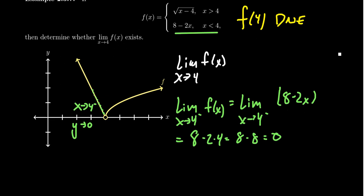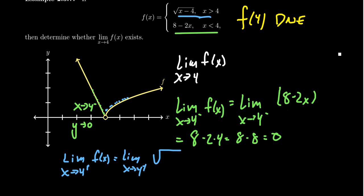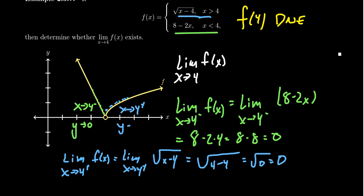If we approach from the right, the function behaves like the square root of x minus 4. So the limit as x approaches 4 from the right of f of x looks like the limit as x approaches 4 from the right of the square root of x minus 4. By limit properties, we can evaluate this at x equals 4: the square root of 4 minus 4 is the square root of 0, which is 0. The left-hand limit is 0 and the right-hand limit is 0 — since both one-sided limits agree, the limit of f of x as x approaches 4 is 0.